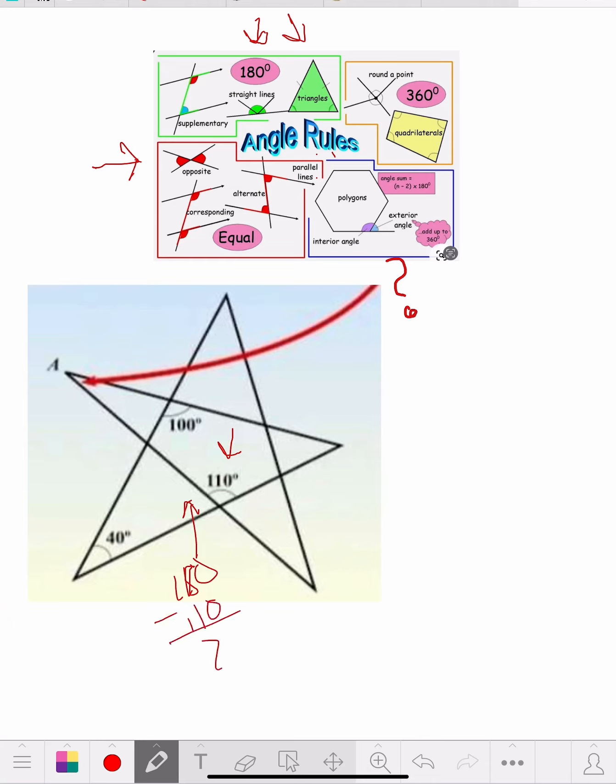70, so this is 70. Now we know the whole triangle is 180 degrees, so what do we got? We got a 40 and we got a 70, see it, 40 right there, 40 and a 70.